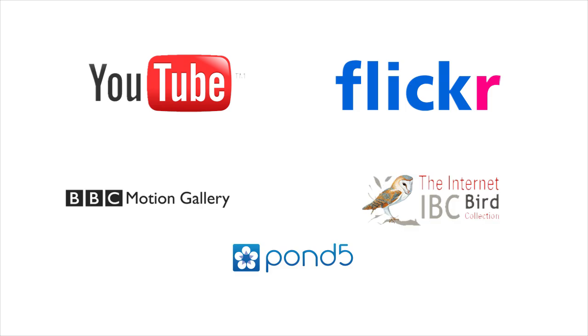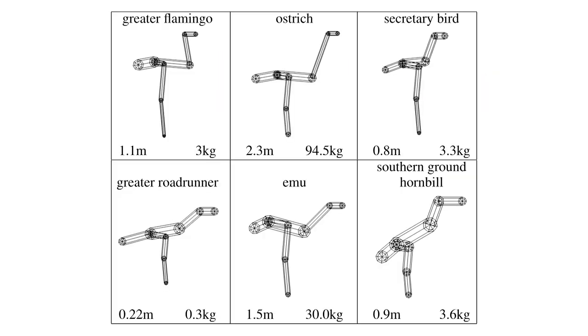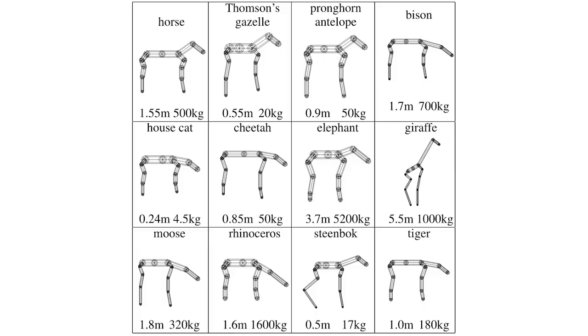We start with a set of video footage capturing walking gaits for a range of different animals. This footage is obtained from online video sharing sites such as YouTube, Flickr Video, and a number of other sources. The data we use covers a range of 6 bipeds and 12 quadrupeds, with a variety of different shapes and sizes.